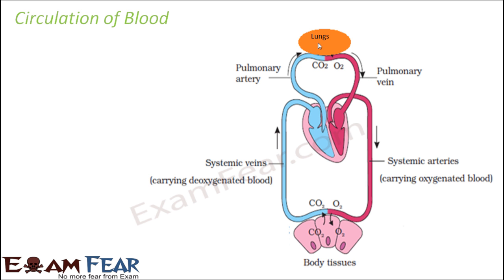Wherever you have the red color, that would mean oxygenated blood; wherever you have blue color, that would represent deoxygenated blood. Here is the heart, and here you have the lungs and the body tissues which represent various parts of the body.